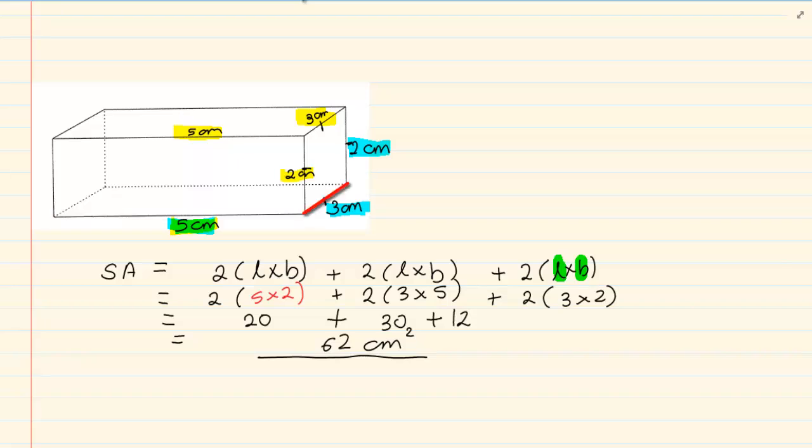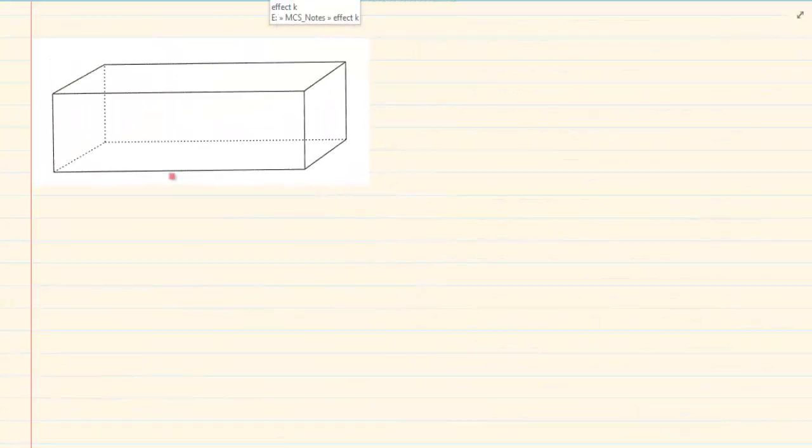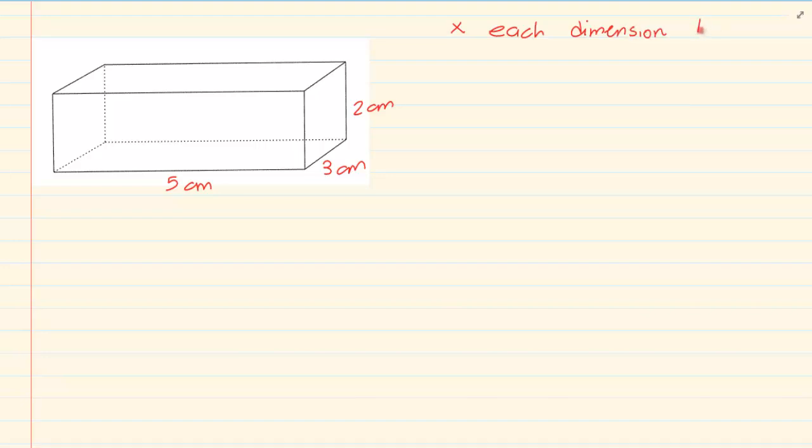So let us take the following drawing. We have 5, 3 and 2. If we have the same drawing but then I say let us multiply the length, breadth and height by a factor of 3. So what are they saying? They are saying let us multiply each dimension by 3.